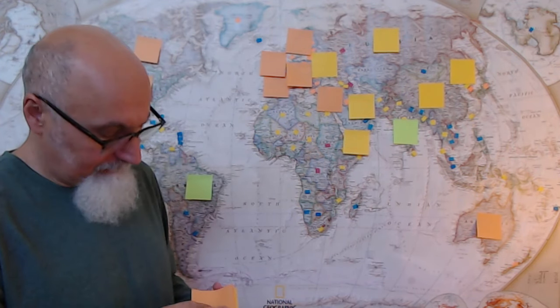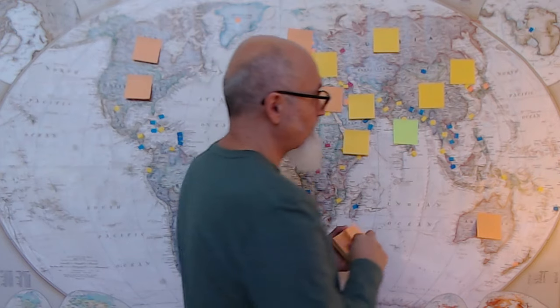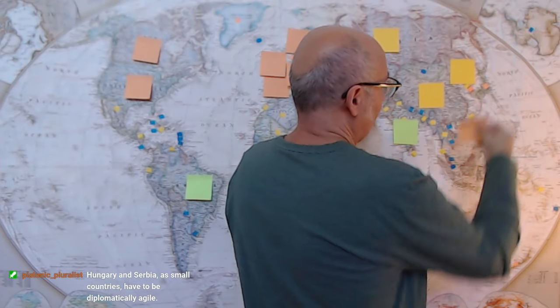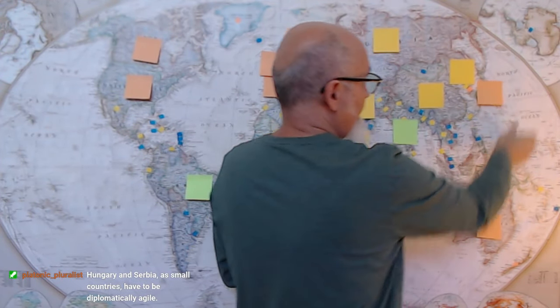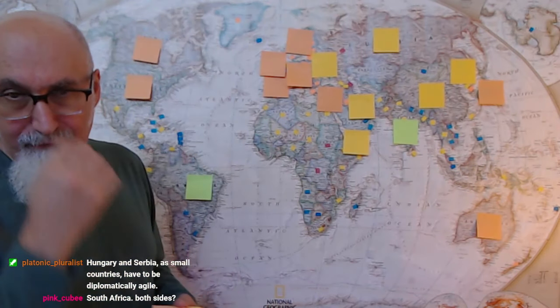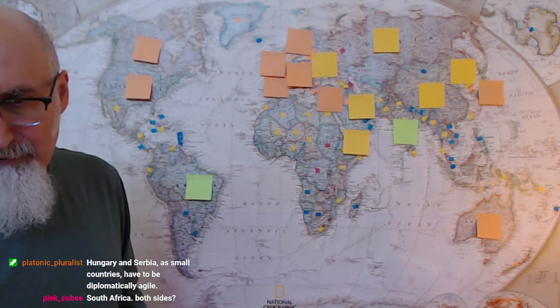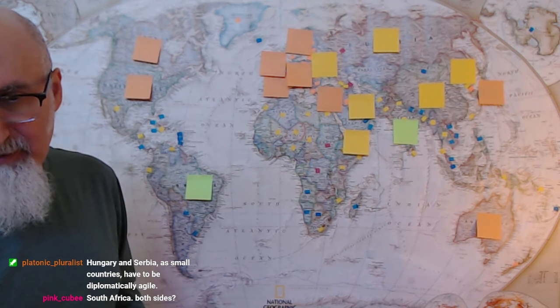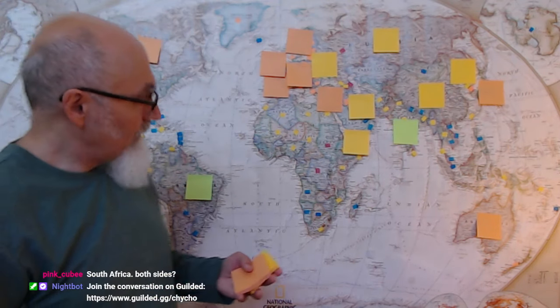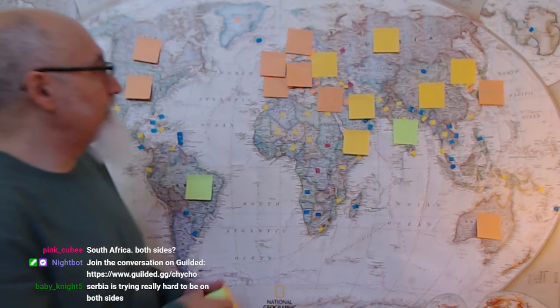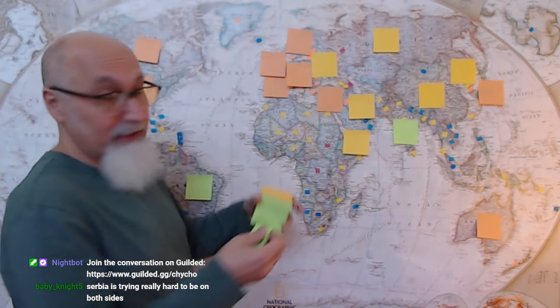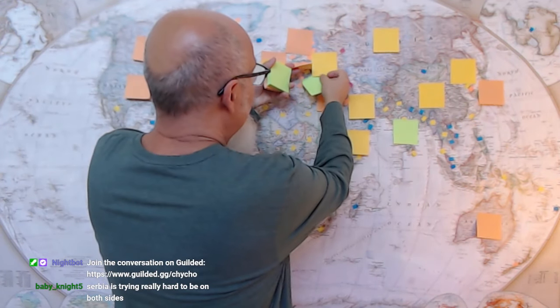Japan, Japan US. Philippines, I think US. Philippines, US. Hungary and Serbia as small countries have to be diplomatically... I agree there is, we should put a green here because there are some countries that are going to try to stay green, but I don't think it's going to work personally. You're on the front lines, right?